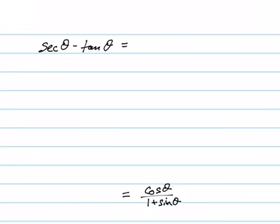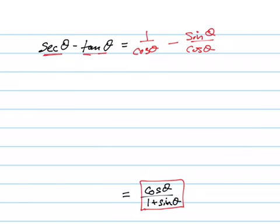The first thing we're going to do is recognize that these two—I'm keeping an eye on this down here—so I want to write this as 1/cos θ minus sin θ/cos θ. Then with a common denominator, that's (1 - sin θ)/cos θ.